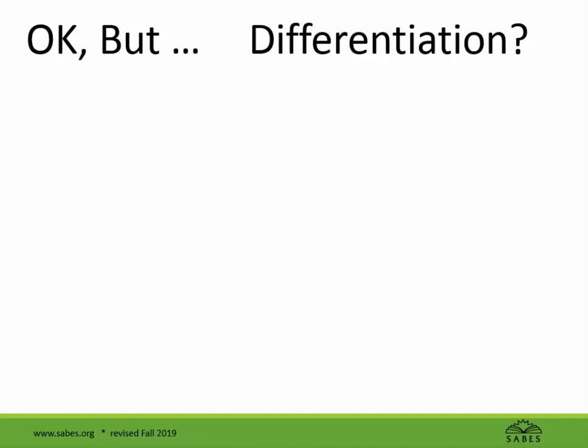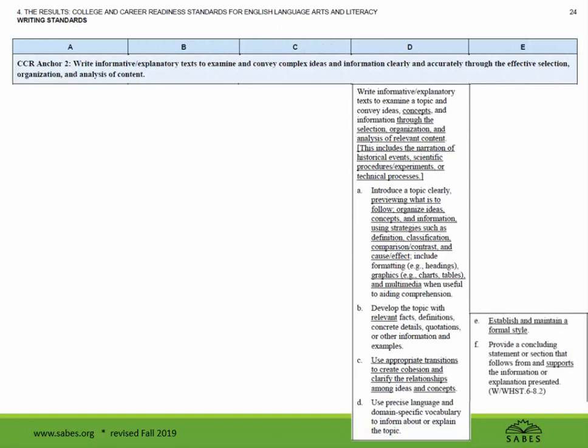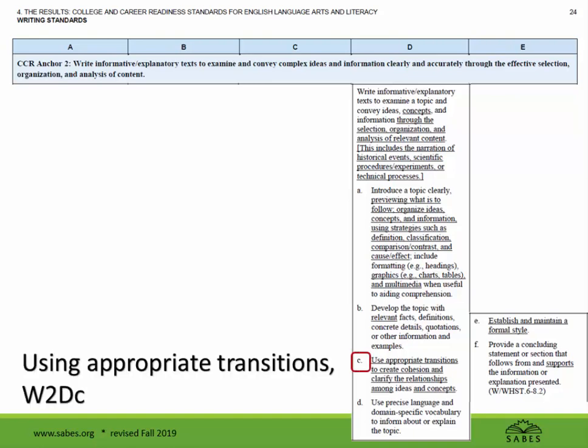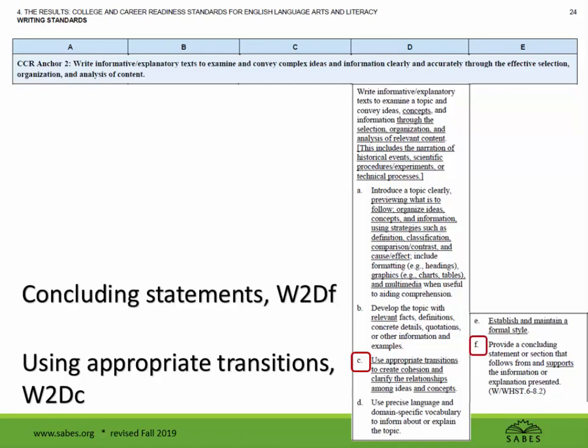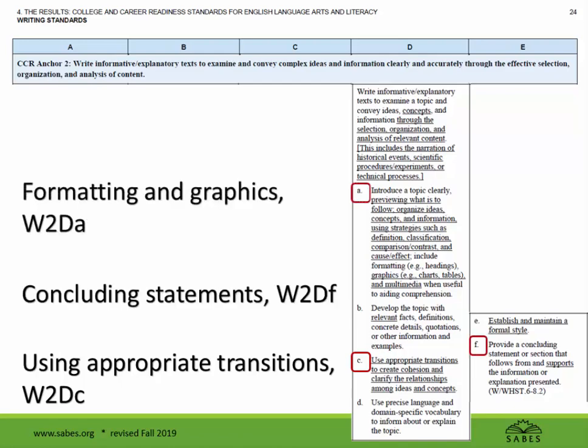For example, Writing Anchor 2, level D, has six sub-skills. Perhaps you are working with the whole group on using appropriate transitions, small letter C. Some students could also be asked to be accountable for their concluding statements or their use of formatting and graphics, if those are skills that they have already worked on.